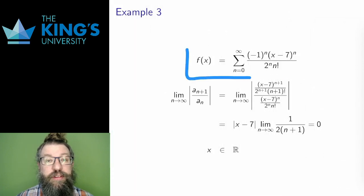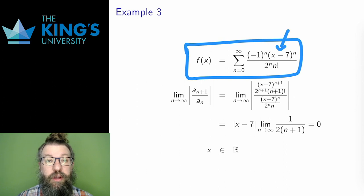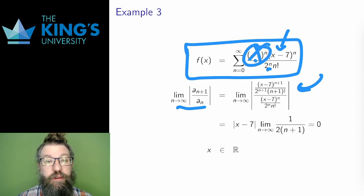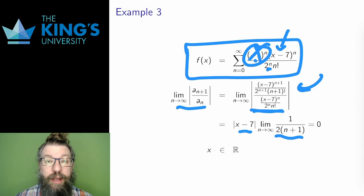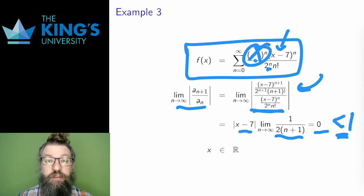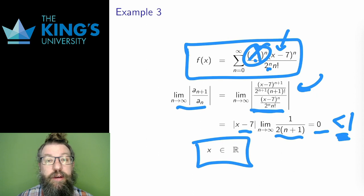Here is one more example. The center here is seven, so we have powers of x minus seven. The term has coefficient (−1)^n over (2^n · n!). Again I use the ratio test. The ratio removes all the powers of negative one because of the absolute value, so I don't need to worry about those. After simplifying the nested fraction, the absolute value of x minus seven comes out of the limit. The remaining terms almost all cancel, leaving 1 over (2(n+1)) from the factorials. The limit of this is zero. Since the limit is zero regardless of the value of x, this series converges for any x, and the domain of this function is all real numbers.